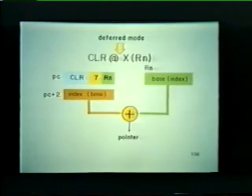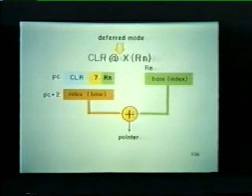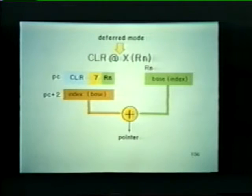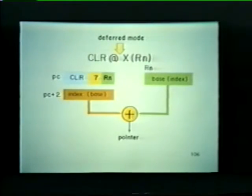We use this notation to designate the index deferred mode. The at symbol indicates that this is a deferred addressing mode. The letter X represents our index word or base address that is added to the value contained in register R sub N. Since this is a deferred mode, the result produces a pointer instead of an address.